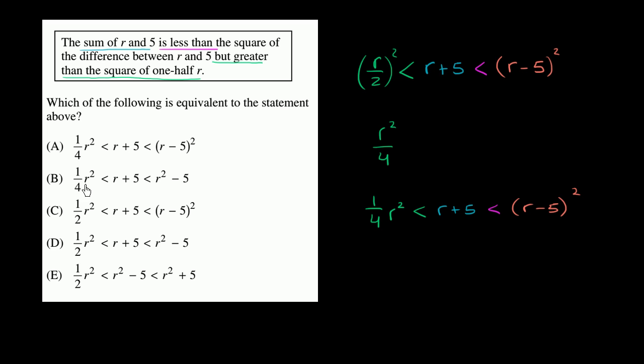Let's see. Only these two choices have one-fourth r squared less than r plus 5, which is then less than r minus 5 squared. So this is exactly what we wrote down.